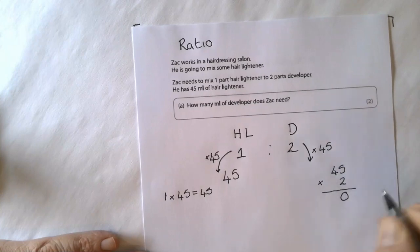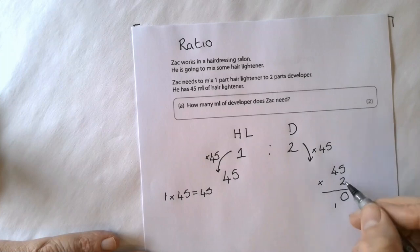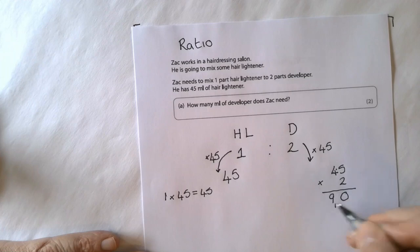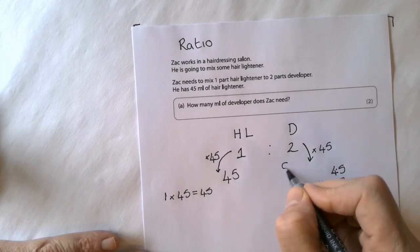So 2 multiplied by 5 gives me 10. I've got a zero here and 1 to carry over. Then 2 multiplied by 4 equals 8 plus the 1 gives me 90.